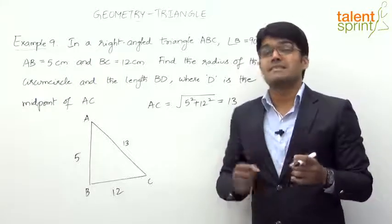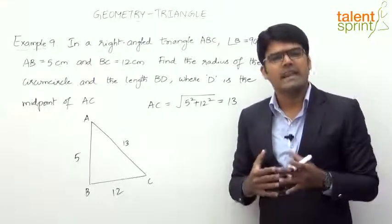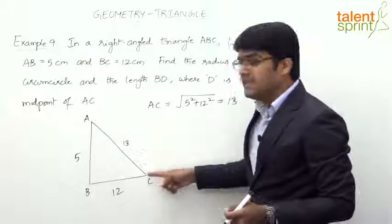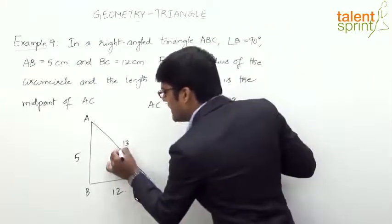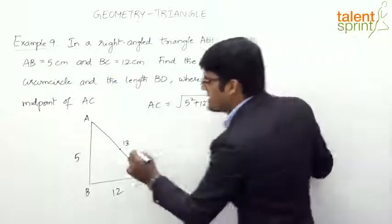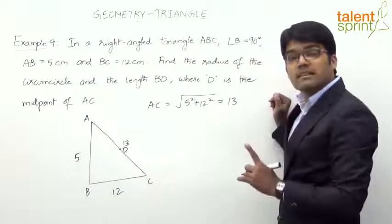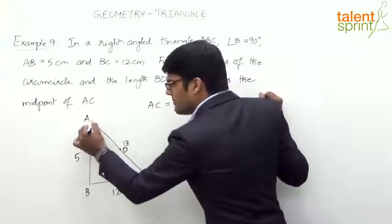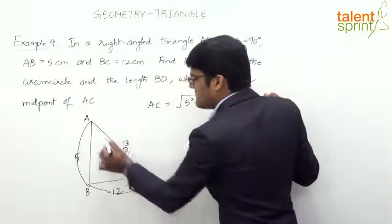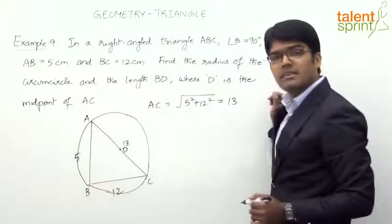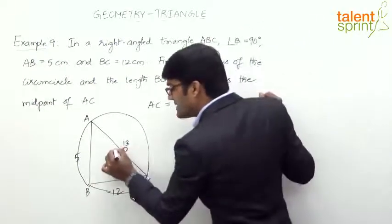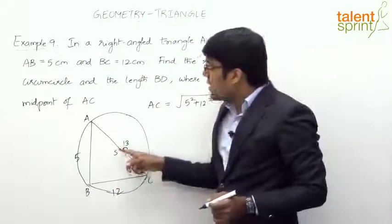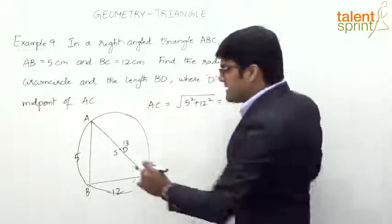Now, while discussing the circumcenter, we mentioned that for a right angle triangle, the circumcenter is always the midpoint of the hypotenuse. The hypotenuse here is AC, and D is its midpoint. So D is the circumcenter. From this circumcenter, if we draw a circle, it will pass through all three vertices.